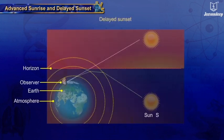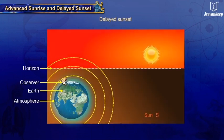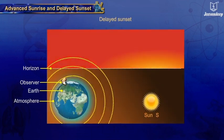Similarly, the sun appears to set 2 minutes after it has actually crossed the horizon below, extending the duration of daylight by approximately 2 minutes at sunset as well.